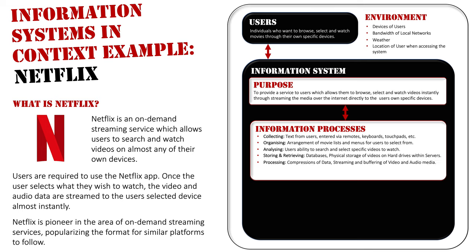With processing, a big part would be the compression of data. The whole thing we love about Netflix is that we start watching movies almost instantly. There needs to be compression as the data is being transferred, plus the streaming and buffering of the video data. These are large file sizes — on some TVs you're watching at 4K quality, which involves mammoth file sizes for video files that also contain audio. The compression, streaming, and buffering so it can be watched almost instantly is a very technical process.